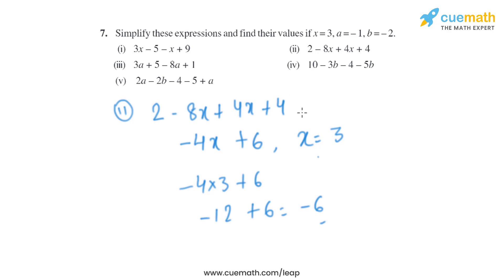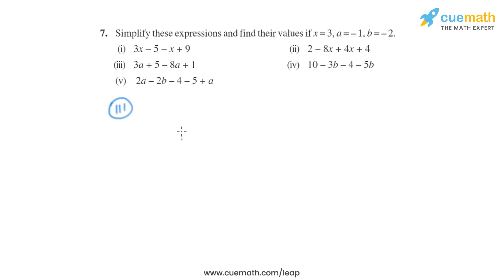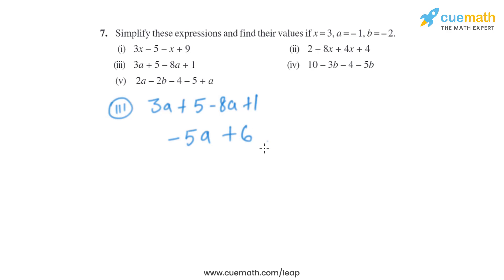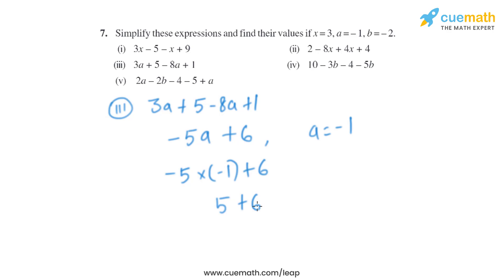The third expression is 3a plus 5 minus 8a plus 1. The like terms 3a and minus 8a give us minus 5a, and 5 plus 1 gives us 6. So the simplified form is minus 5a plus 6. Putting a equals minus 1, it becomes minus 5 into minus 1 plus 6, which is plus 5 plus 6, which equals 11.